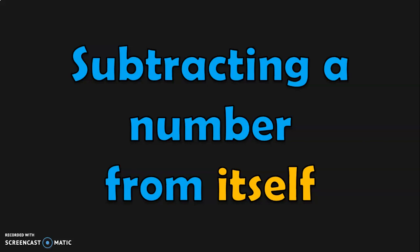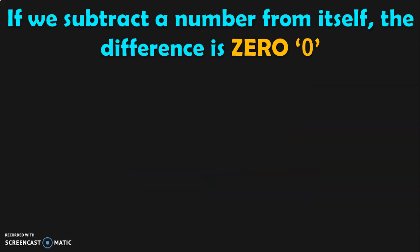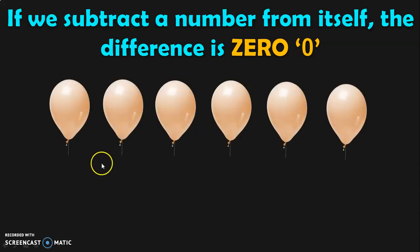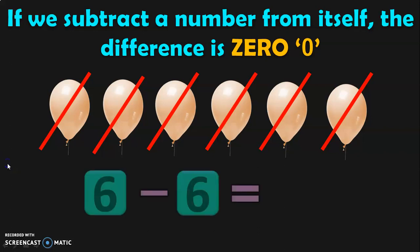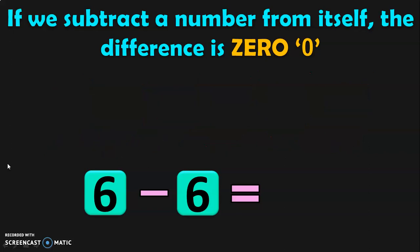Let us move on to the next property — subtracting a number from itself. If we subtract a number from itself, the difference is 0. You went to a birthday party where there were 6 balloons. You, along with your friends, burst out all the 6 balloons. So 6 minus 6 equals how many balloons left? 0 balloons. When we subtract a number from itself, the difference will be 0.